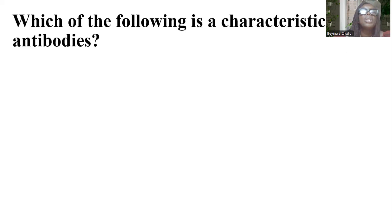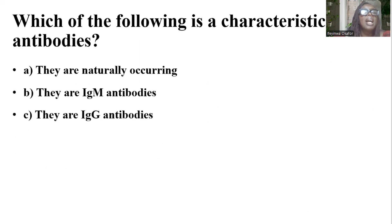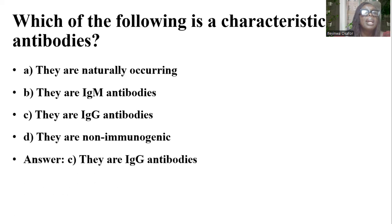Which of the following is a characteristic of RH antibodies? Options are: they are naturally occurring; they are IgM antibodies; they are IgG antibodies; they are non-immunogenic. And the answer is C — they are IgG antibodies.